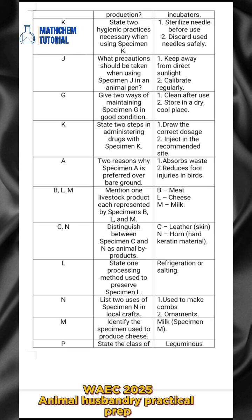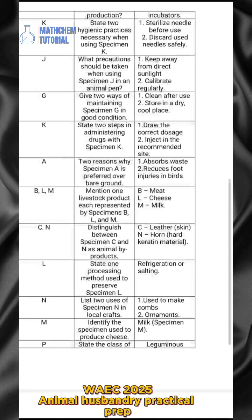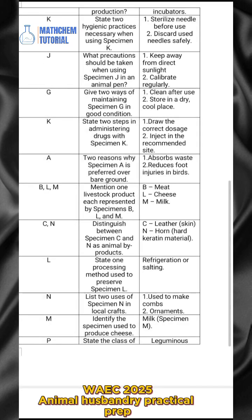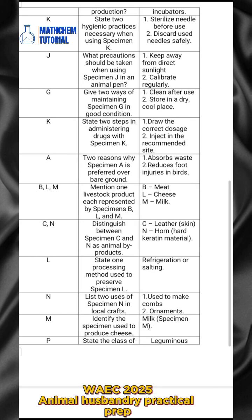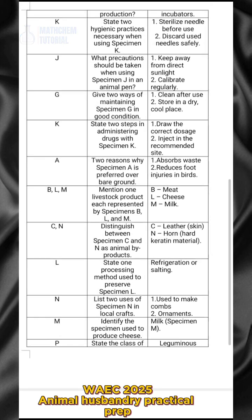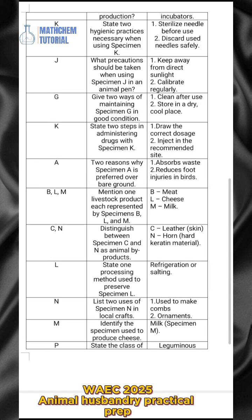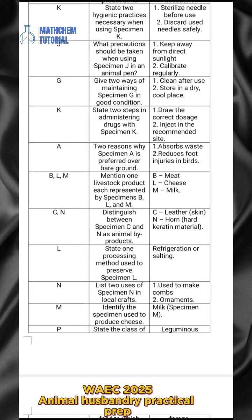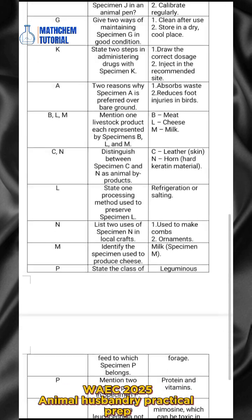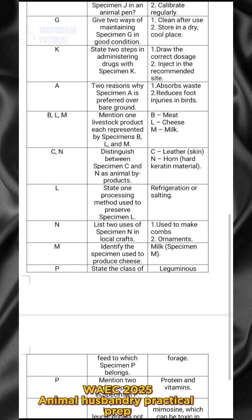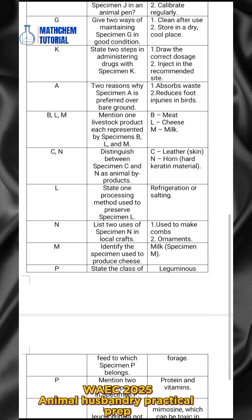For specimens B, L, and M, you are asked to mention one livestock product each represents. For specimen B, the answer is meat. For specimen L, it represents cheese. For specimen M, it represents milk.